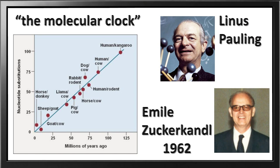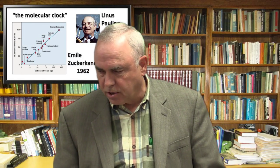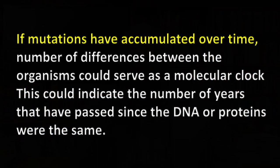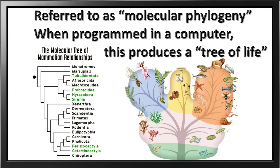Let's look at the molecular clock, proposed by Linus Pauling and Emile Zuckerkandl. By comparing DNA sequences and their protein products, you could determine how organisms are related — the more closely DNA resembles each other, the more closely related the organisms. If mutations accumulated over time, the number of differences between organisms could serve as a molecular clock, indicating how many years have passed since their DNA was the same. Of course, we understand they made a lot of assumptions with that clock.